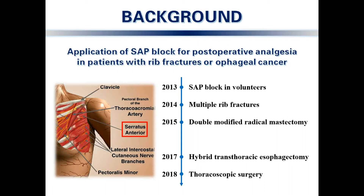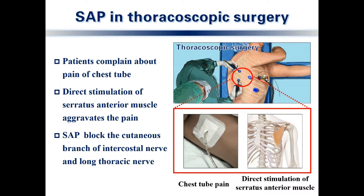Since Blanco discovered SAP block in volunteers in 2013, the SAP block has been used to relieve pain in patients with rib fractures or esophageal cancer. However, most patients complain about pain from the chest tube after thoracoscopic surgery. The chest tube directly stimulates the contraction and spasm of the serratus anterior muscle, which aggravates the pain.